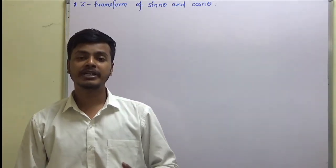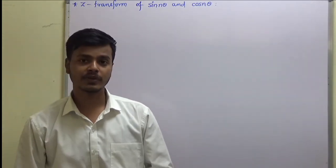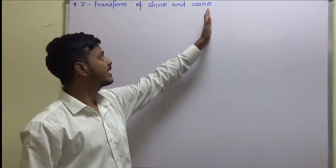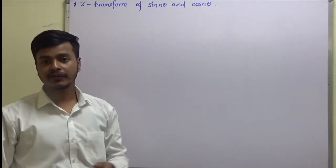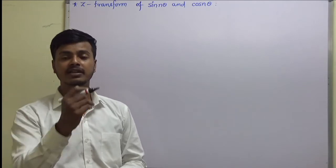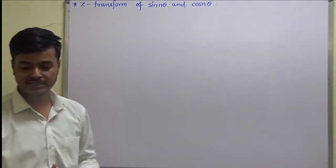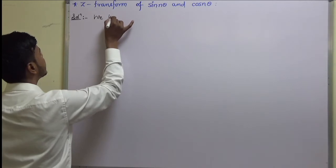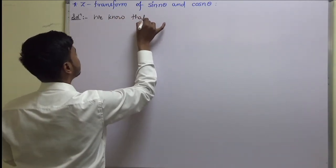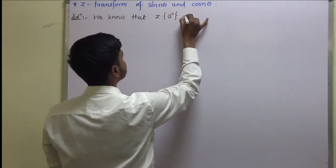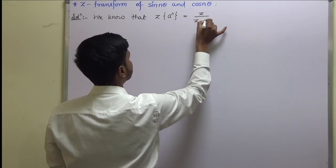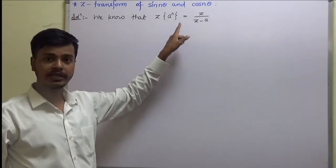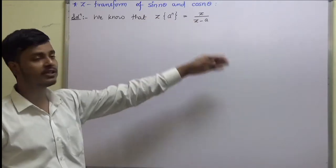These are the elementary results that we need to remember in order to solve problems. We start with the Z transform of the standard sequence: Z transform of aⁿ is Z upon Z minus a. This is the Z transform of aⁿ that you need to remember, and we will make use of it to find out the Z transform of sin(nθ) and cos(nθ).